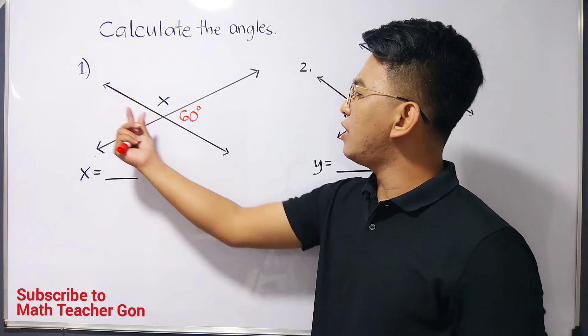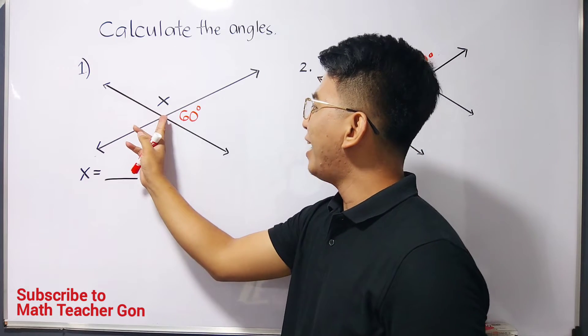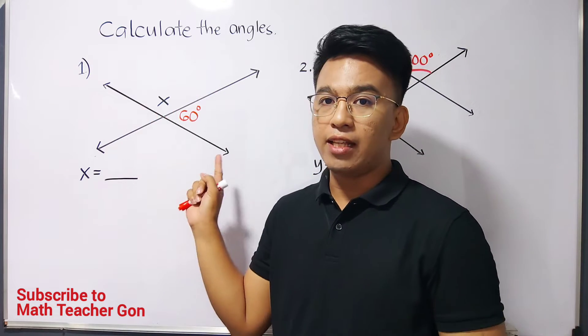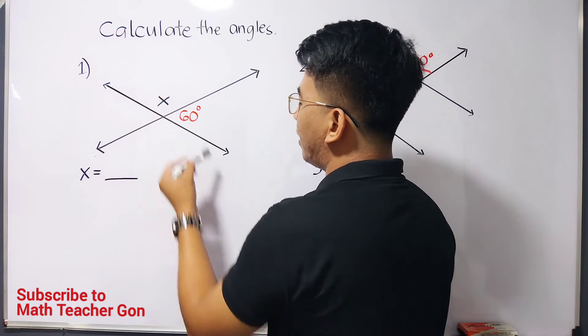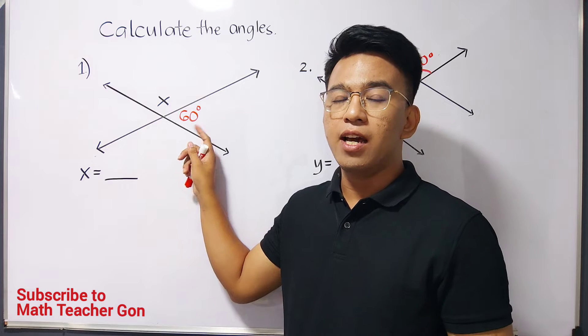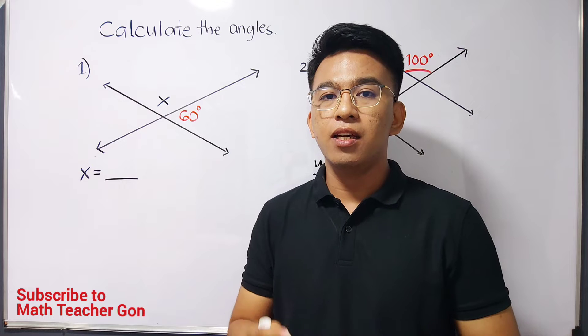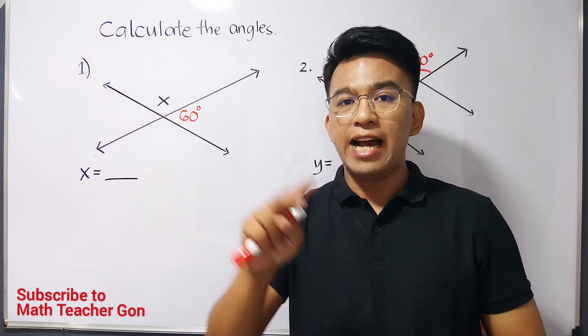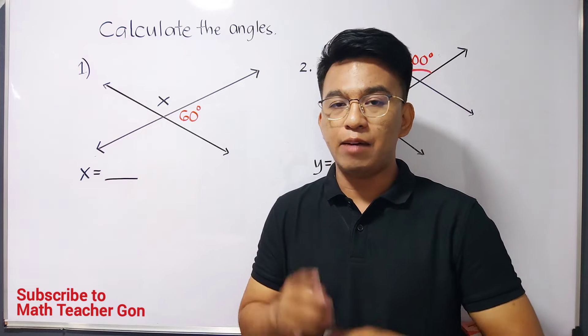So whenever you see a straight line, and we have here a line that cuts this straight line, you will treat or you will consider these two angles, this angle x and this 60 degree angle as supplementary angles. And remember, when you say supplementary angles, these are angles with the sum of 180 degrees.